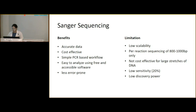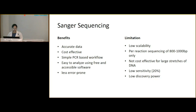Sanger is not cost-effective for long stretches of DNA. It has low sensitivity, meaning for somatic mutations your heterogeneous population should have at least 20% target cells. Finally, it has low discovery power — it is difficult to find novel variants through Sanger because the primer must target a known sequence.